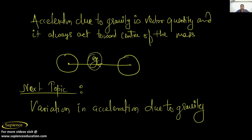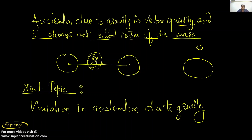Next — acceleration due to gravity is a vector quantity. It always acts towards the center of mass. Let us consider this is the earth and this is an object. Acceleration due to gravity will always act in the central direction — it won't act sideways. It is one direction only, so it is also known as a vector quantity.